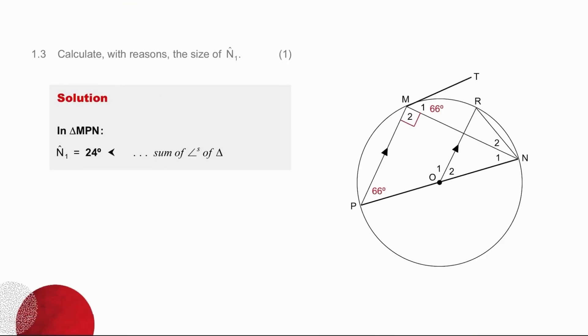So for 1.3's solution, all we have to write up is angle N equals 24 degrees, sum of angles in triangle.